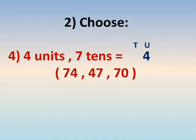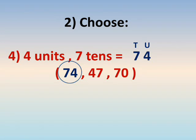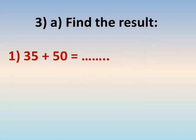Number four: four units, seven tenths equals — is it 74, 47, or 17? Again, write units in the right hand side and tenths in the left hand side. Write four under the units digit and seven under the tenth digit. It will be seventy-four.